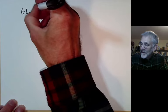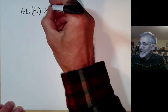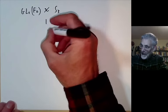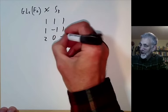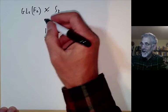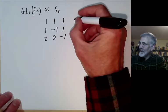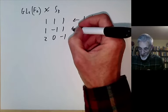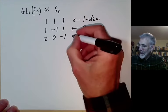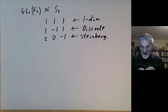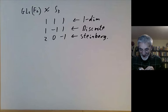Let's look at GL2(F₂). This has order six and is actually isomorphic to the symmetric group on three points. Its character table has rows of dimensions 1, 1, 2 with values 1,1,1; 1,1,−1; 1,2,0 (where the first column is the dimension). The one-dimensional trivial representation, the sign representation, and the two-dimensional representation correspond respectively to the trivial, discrete series, and Steinberg representations. There's actually no principal series representation for F₂, so this example is a bit misleading.